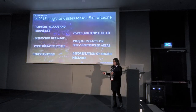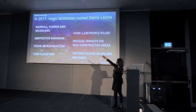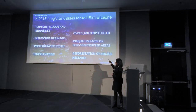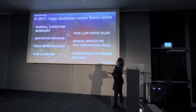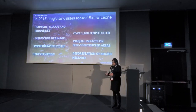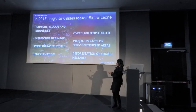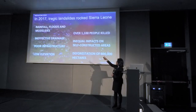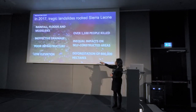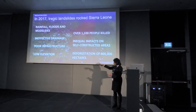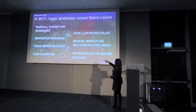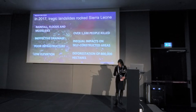The motivating case study was after the 2017 landslide that produced more than 1,000 people killed. The main cause is a combination of climate and economic situation: rainfall, floods, and the situation in infrastructure — ineffective drainage, poor infrastructure in general, low elevation, and a lot of deforestation.